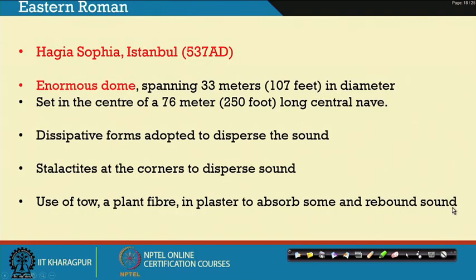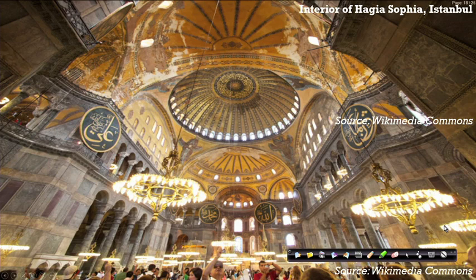Moving to the Eastern Roman period, the Hagia Sophia in Istanbul has an enormous dome spanning 33 meters set in a 76-meter central nave. Dissipative forms were used to disperse sound. Stalactites at the corners helped disperse sound, and the use of tow — a plant fibre — in the plaster to absorb and rebound sound has also been researched.